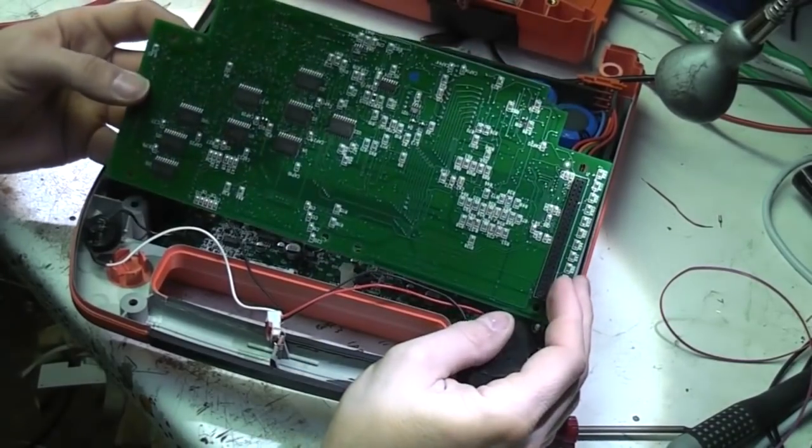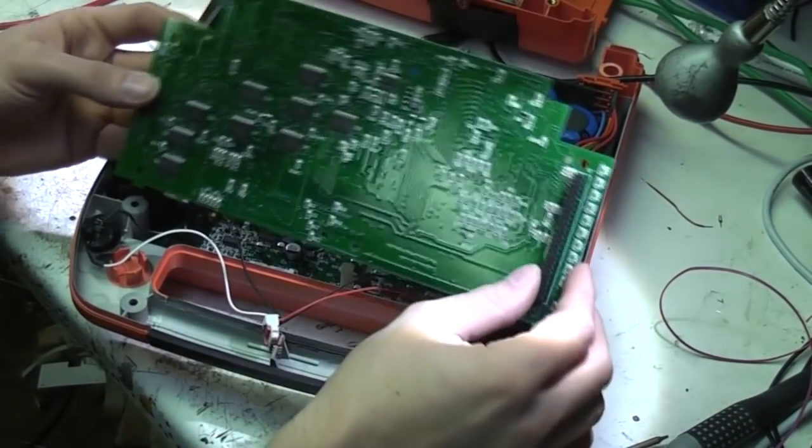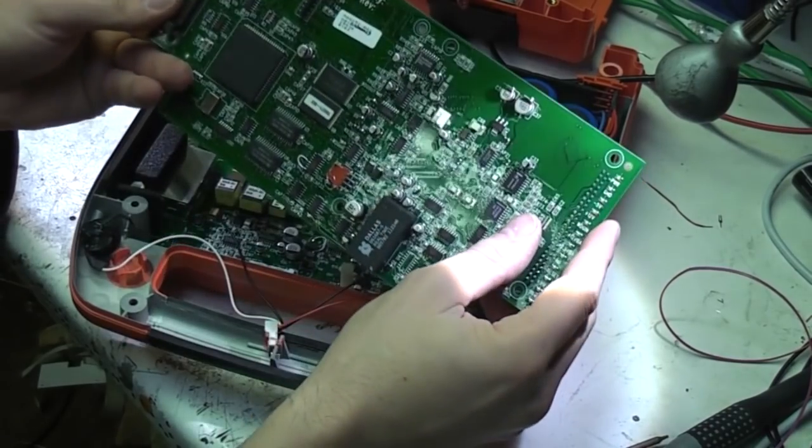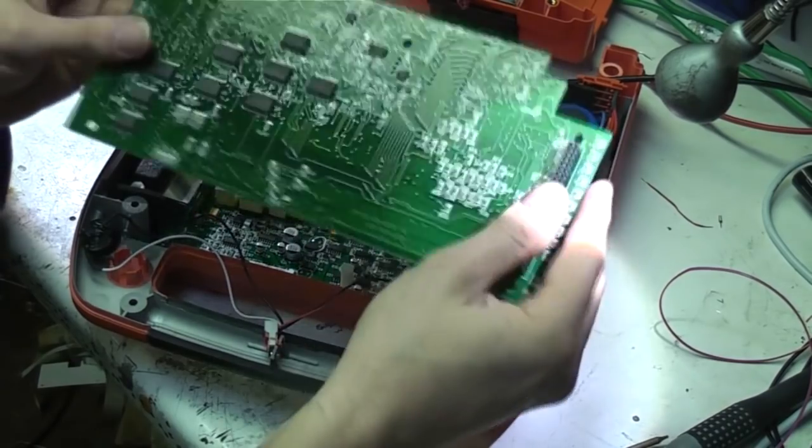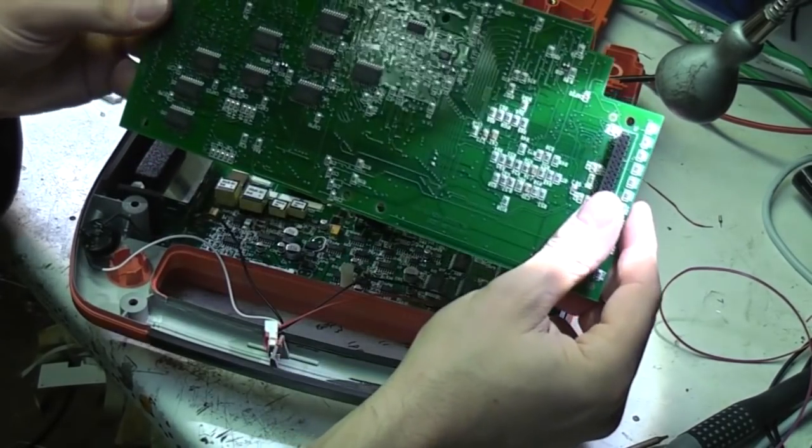Not much to see on the other side of this board. Just a few bus buffers, resistors, not much else. It looks like it's about a six layer board. You can see quite a lot of traces on a secondary layer in there and there'll probably be some power planes going through the middle.